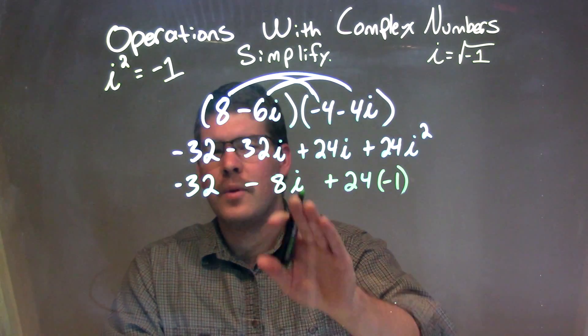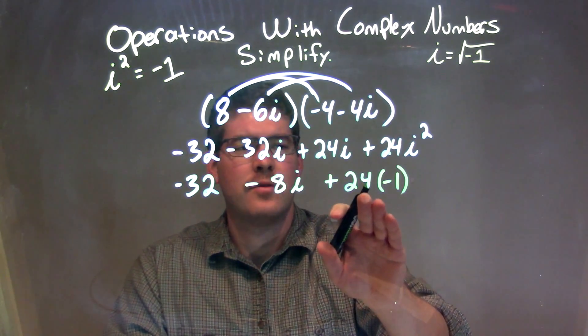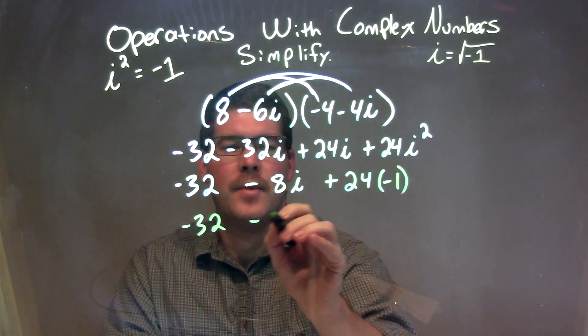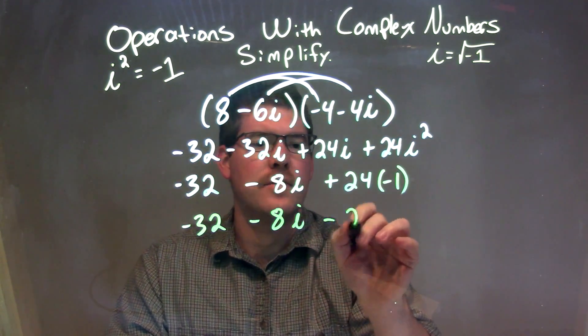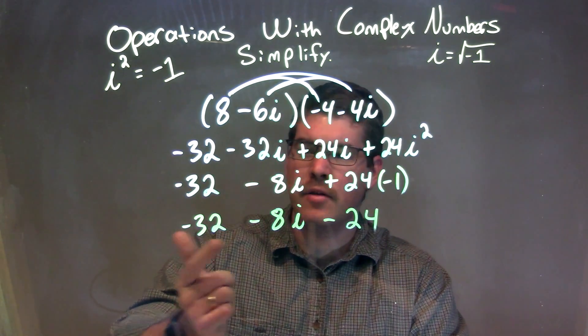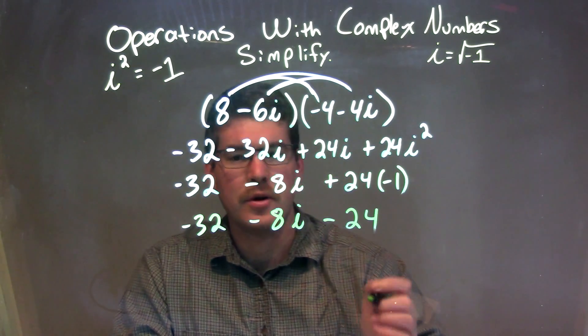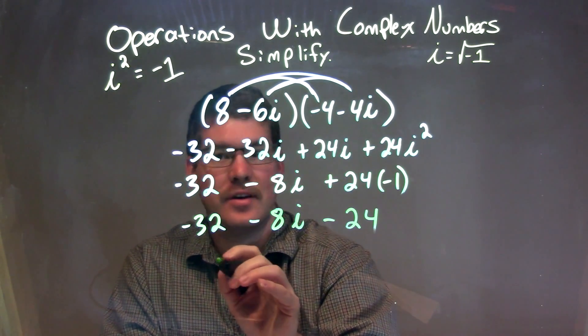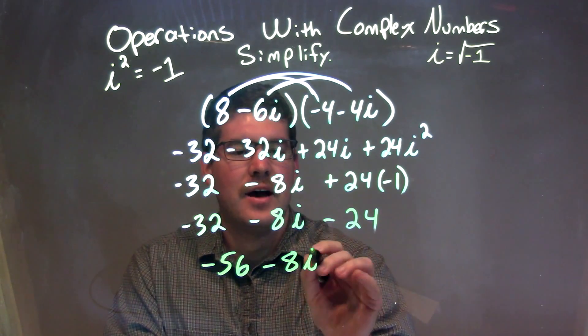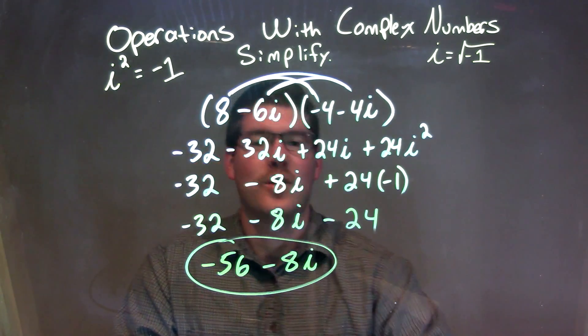So we can simplify a little more. 24 times negative 1 is negative 24. So we have negative 32 minus 8i minus 24. Let's combine our two real numbers, the negative 32 and negative 24, and combine it to be negative 56. So we have negative 56 minus 8i. And that is our final answer.